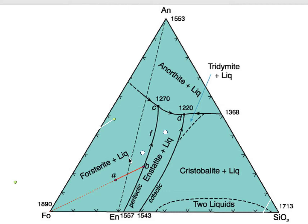What kind of rock will we have if we start with a liquid and let it crystallize completely? For point A, this will be a rock of forsterite plus enstatite plus anorthite — we'll never reach cristobalite or tridymite saturation. Now, how about the first mineral to crystallize? Point A falls within the forsterite-plus-liquid field, bounded by the anorthite-forsterite cotectic, the peritectic reaction curve, and the boundaries of the triangle. Forsterite will form first.